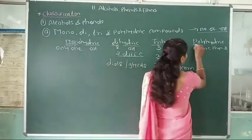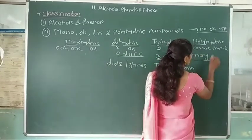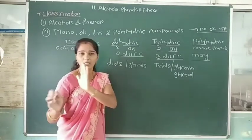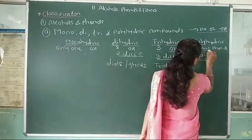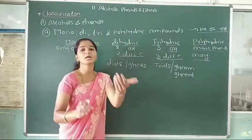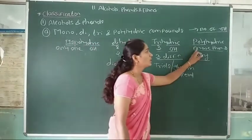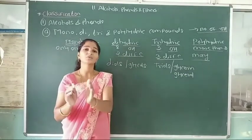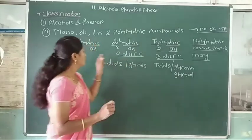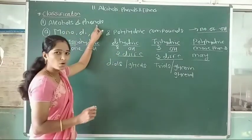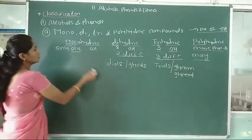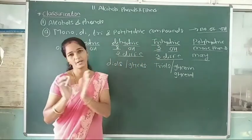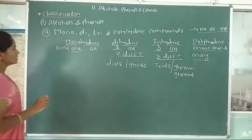Last, polyhydric compounds. Poly means many — more than three hydroxy groups attached to different carbon atoms. This is called a polyhydric compound. These are the four types of alcohol and phenol classification on the basis of the number of 1, 2, 3, and more than 3 hydroxy groups.